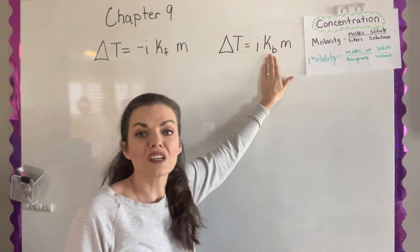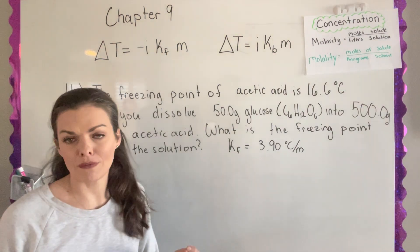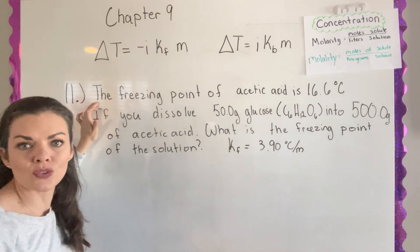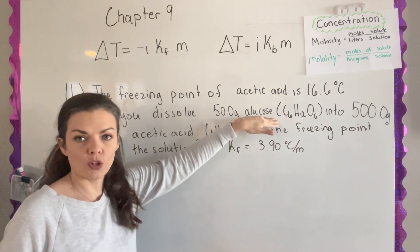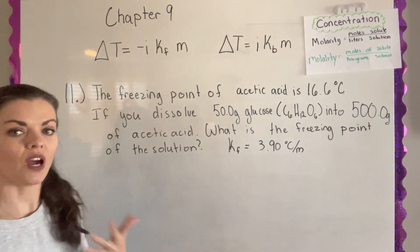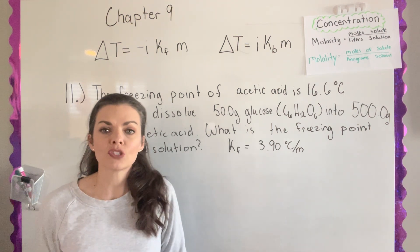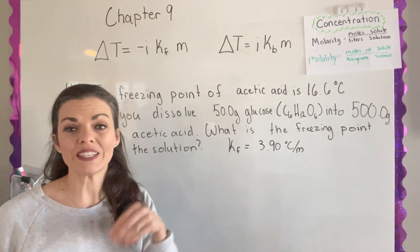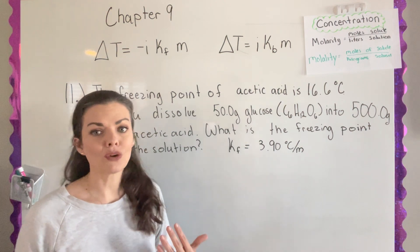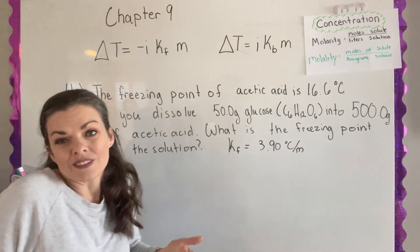The constant depends on the solution and is given to you in these problems. Let's start with problem number 11 of the chapter 9 comprehension check: the freezing point of acetic acid is 16.6 degrees Celsius. If you dissolve 50 grams of glucose — that's a sugar — into 500 grams of acetic acid, what is the freezing point of the solution? I'm going to go to my freezing point formula and look at what variables I have and what I need to figure out.